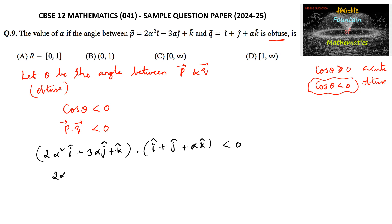That is 2α² into 1 minus 3α into 1 plus 1 into α should be less than 0. That is 2α² - 3α + α is less than 0...